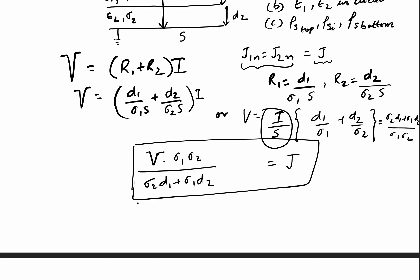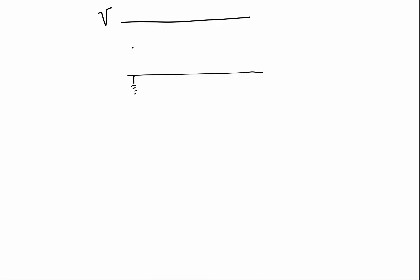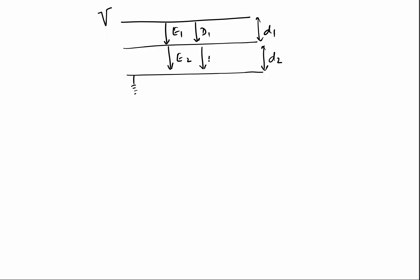Now we will find the electric field intensity in both dielectrics. Let us redraw the figure: the top plate is at potential V, the bottom plate is grounded. Since there is a potential difference between the plates, we expect a field in the dielectrics directed from top to bottom. Let us call these E₁ and E₂ respectively, and similarly D₁ and D₂ will be in the same direction.